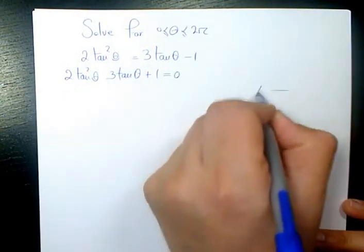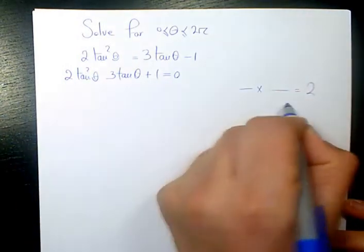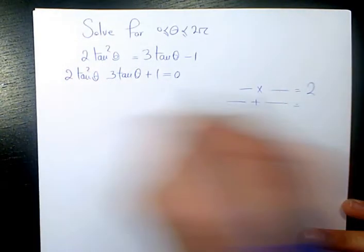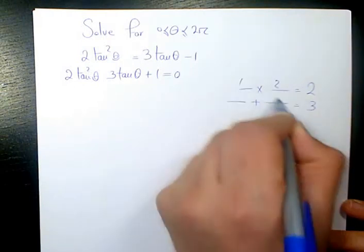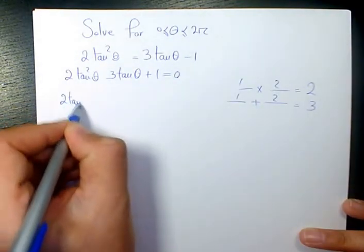Then I need to use the AC method to factor this quadratic equation. 2 times 1 is 2 and add to get 3. So that's easy, it's going to be just 2 and 1. So that will be 2 tan²θ.